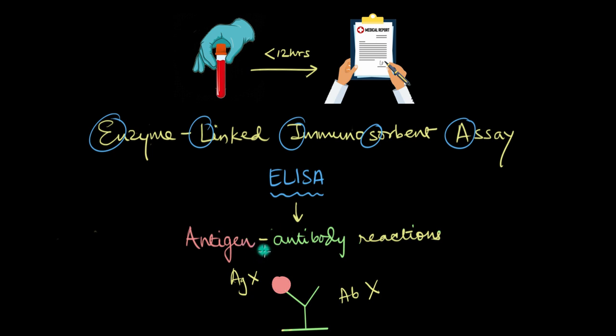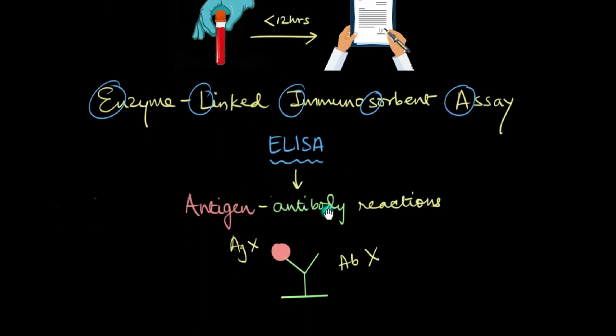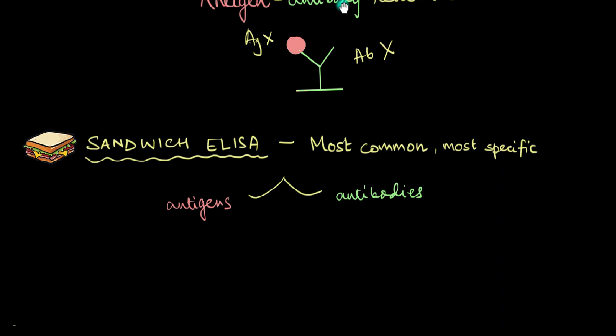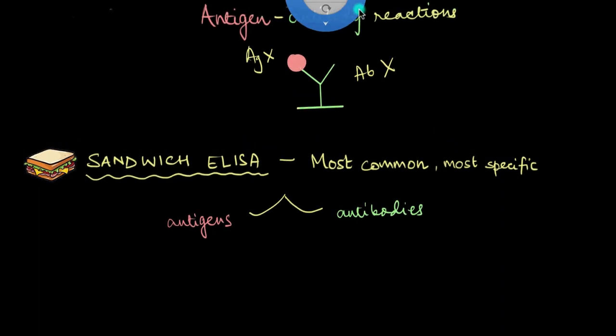Antibodies and even other types of proteins like glycoproteins and hormones. Now there are many types of ELISA techniques but the most common and the most specific one is the sandwich type. Yes, there is something called a sandwich ELISA and sadly it does not involve the food that we all love. So we are going to get rid of this sandwich right here.